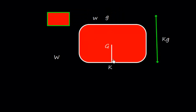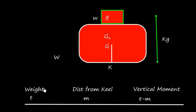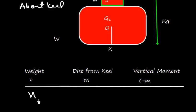Here, let's say this is a vessel with displacement W and the geometrical center of gravity is at G, with distance KG from keel. Now I add a small weight w, whose center of gravity is at small g, at distance K-small-g from the keel. I need to take moment about the keel. The original vessel gives a vertical moment of W into KG.